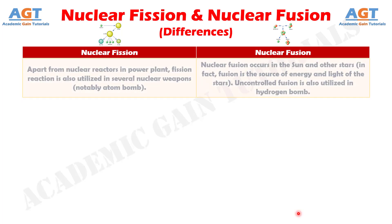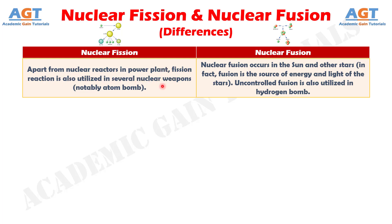And difference number eleven: apart from nuclear reactors in power plants, fission reaction is also utilized in several nuclear weapons, notably the atom bomb. Whereas nuclear fusion occurs in the sun and other stars — in fact, fusion is the source of energy and light of the stars. Uncontrolled fusion is also utilized in hydrogen bombs.